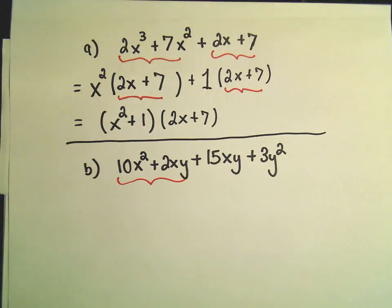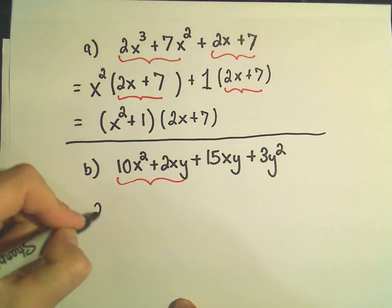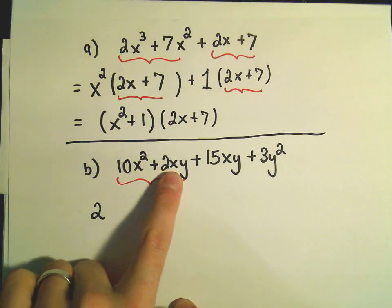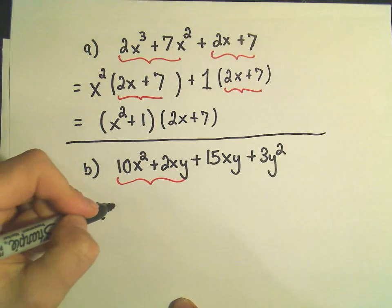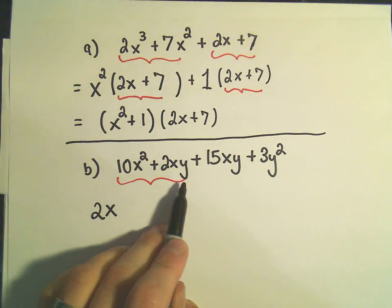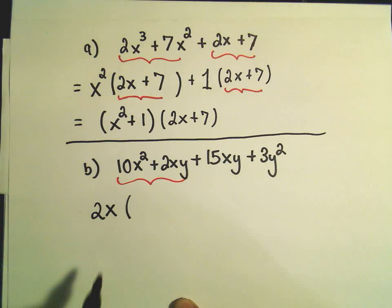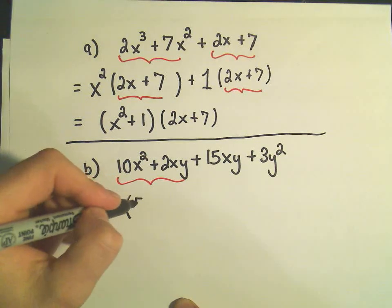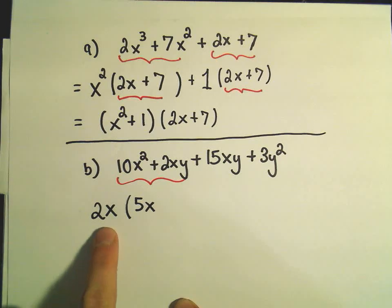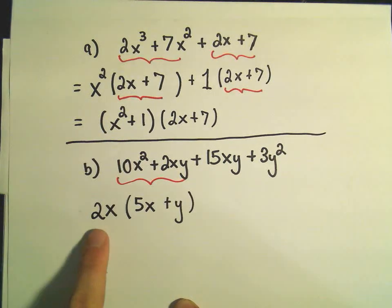So I think I've got a positive 10 and a positive 2 as coefficients. I'll factor out the 2. The first term has an x squared. The second term has an x to the first. So that means I can factor out x to the first. And the second term has a y, but the first one doesn't. So I think we've factored out everything we can. So 2x times 5x would give me 10x squared. And then 2x times, I guess we would just need positive y to get the 2xy.